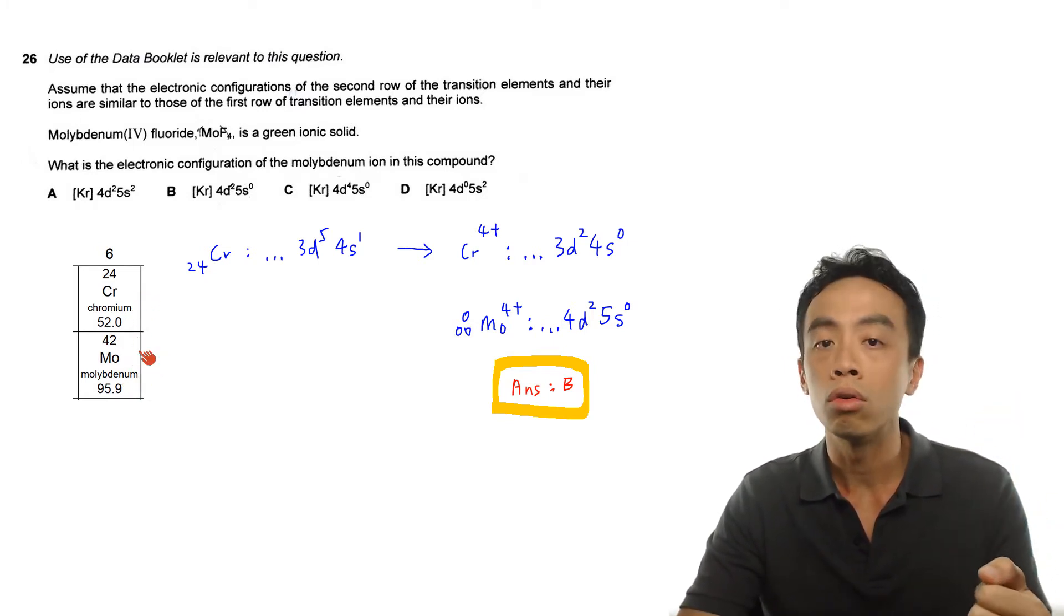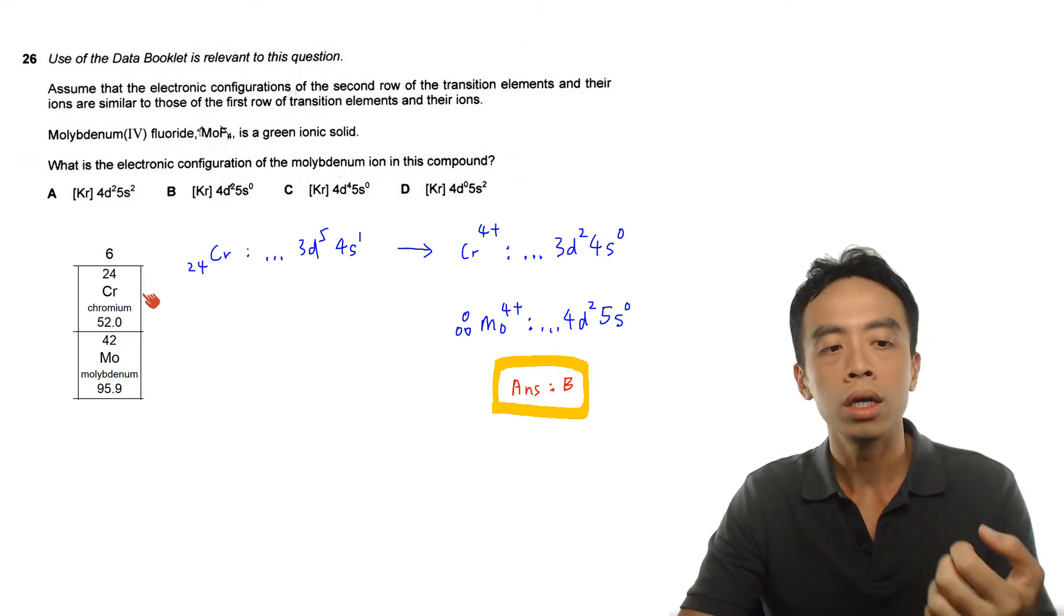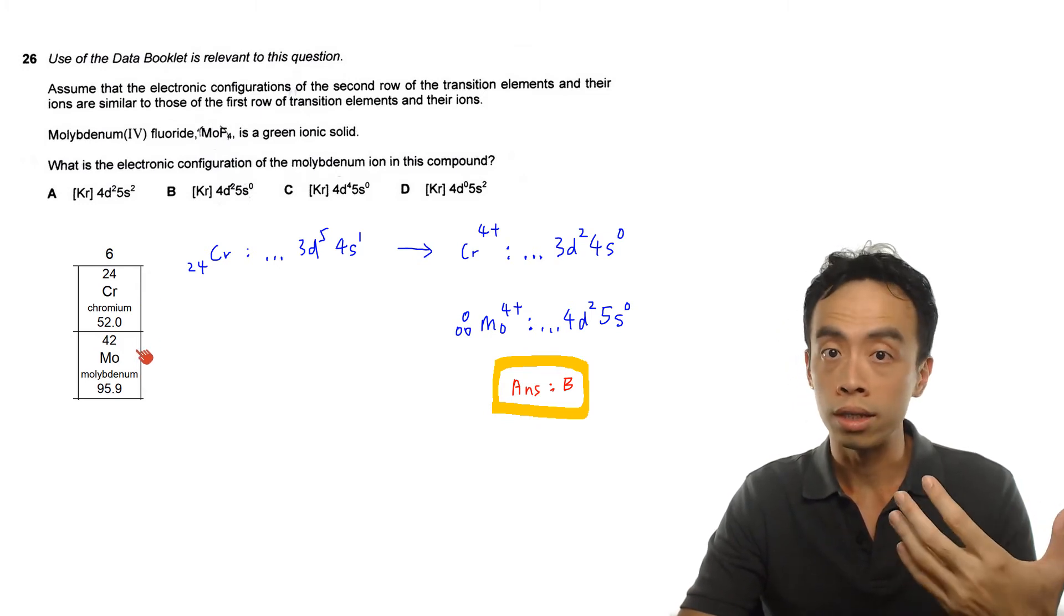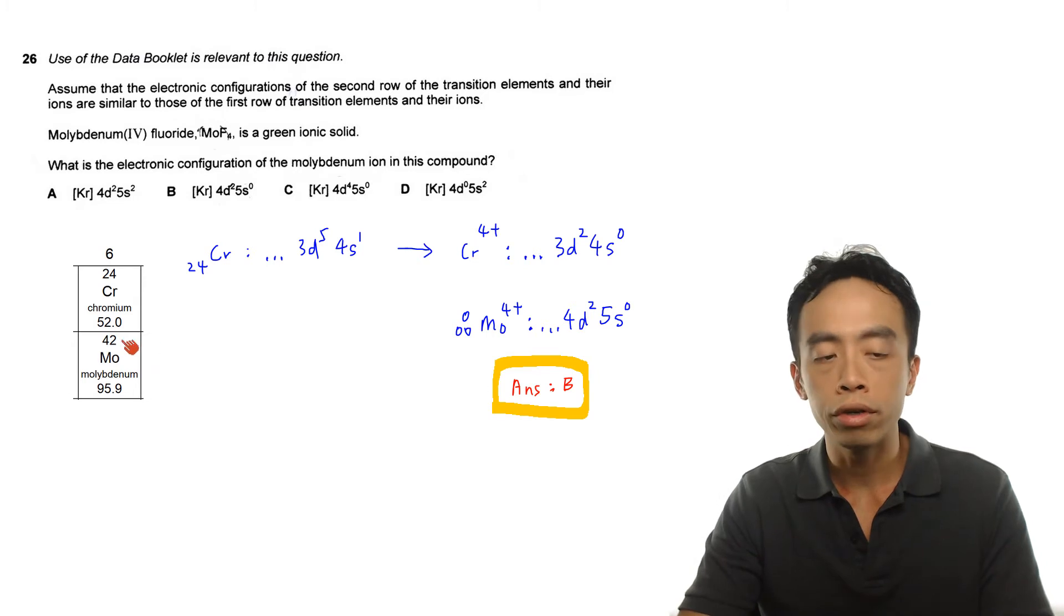If I look inside the periodic table, you'll notice it is under chromium. So we will treat this exactly the same as chromium. Therefore the electronic configuration for Mo4+ should be the same as chromium 4+.